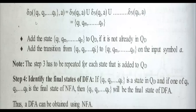We are considering qi to qj as states of DFA. We need to find the transition: on receiving a, what will be the next step? To decide that, we need to find the transition of qi in NFA. Then that result should be made union with the transition of qj in NFA.